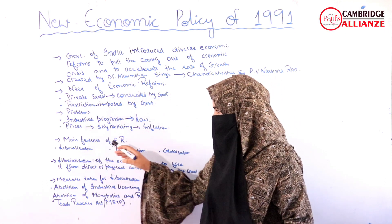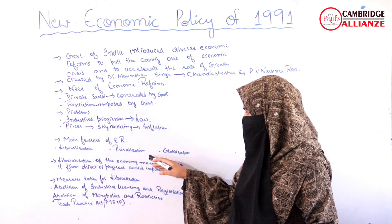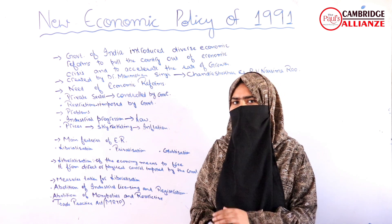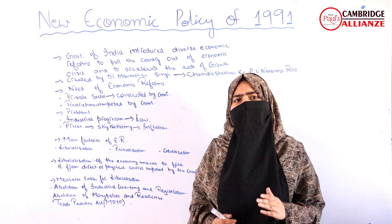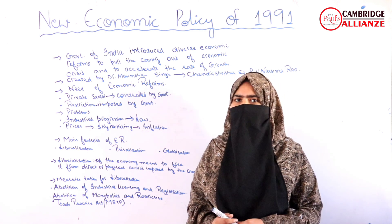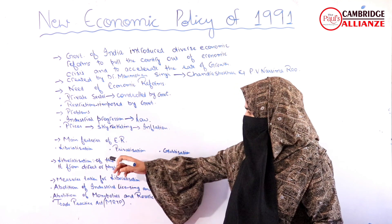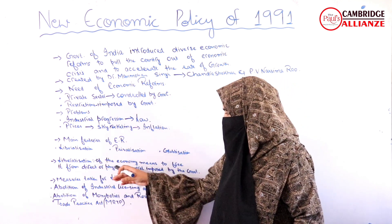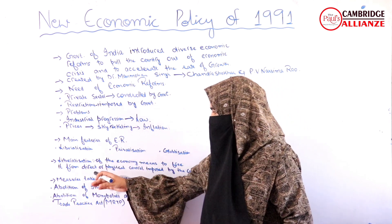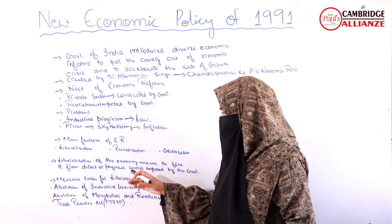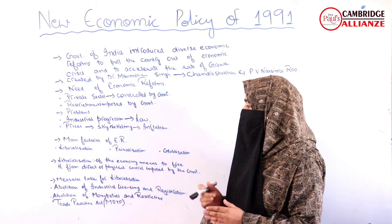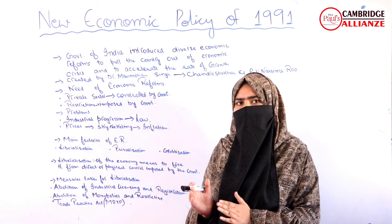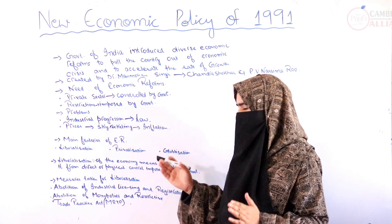The three features are: first, liberalization; second, privatization; and third, globalization. First we will discuss liberalization. Simply, the word 'liberal' means freedom. Liberalization of the economy means to free it from direct or physical control imposed by the government.